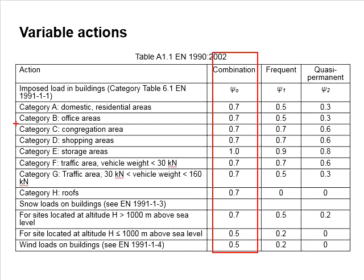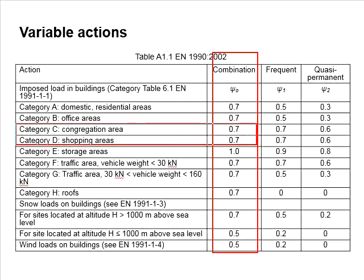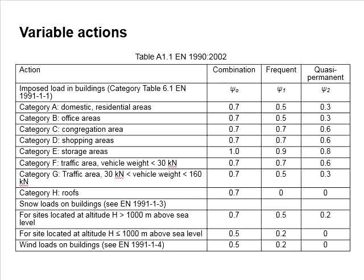For the beam condition, only Category C and D applies. Therefore, the ψ₀ value is 0.7.